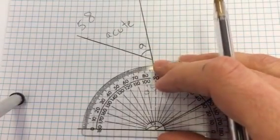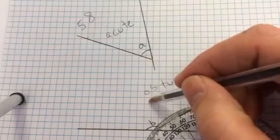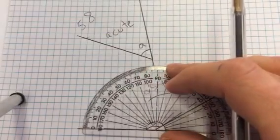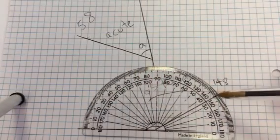So just to go over that again, make sure you're always reading from zero. Look at the size of your angle, roughly is it obtuse or acute. Make sure you're reading from zero and get something that roughly sounds right.